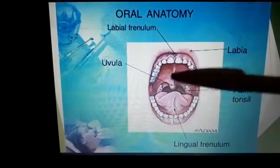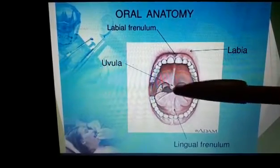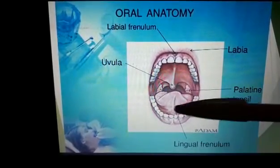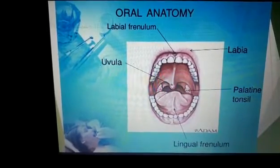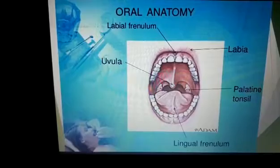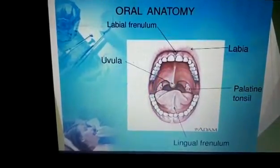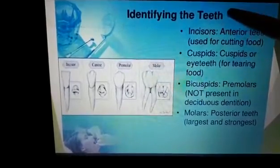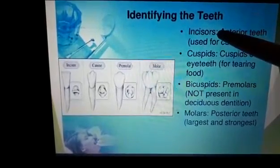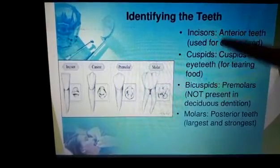The uvula can be seen hanging in the center of the mouth. There is also the lingual frenum and embrasure in the lingual part of the mouth. Palatine tonsils are present inside the mouth as well. When identifying teeth, they vary in shape and function — there are several incisors in shape.